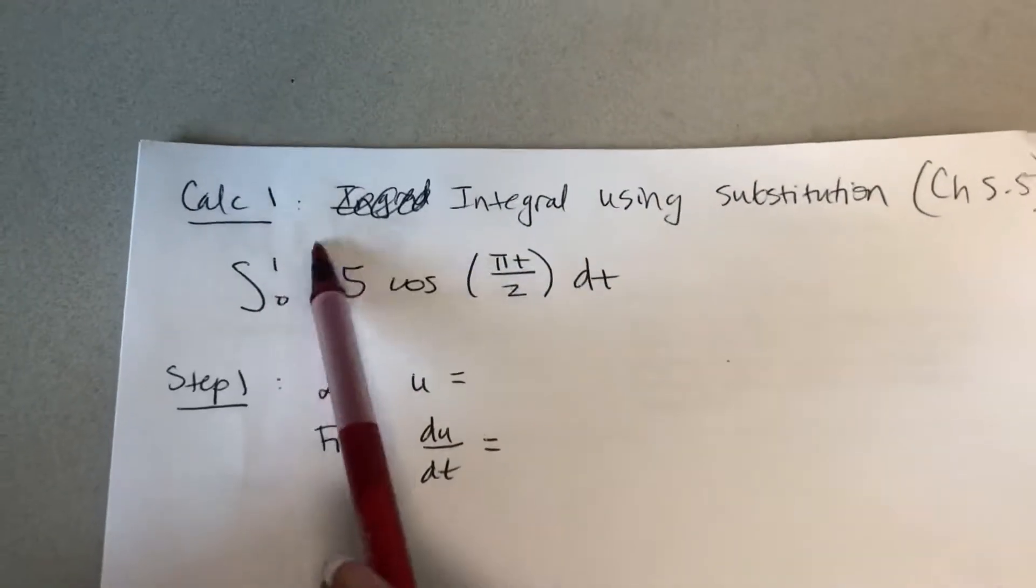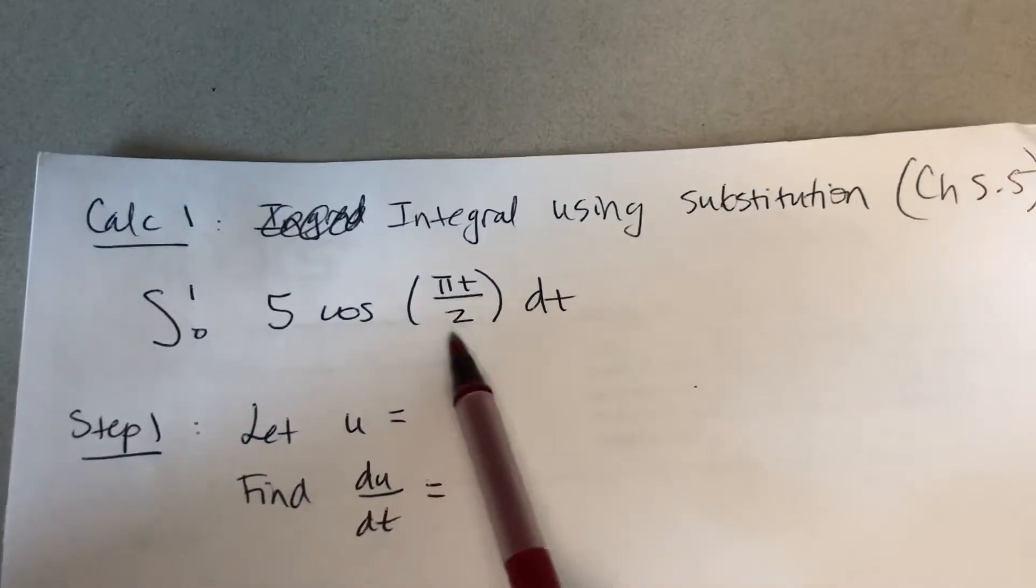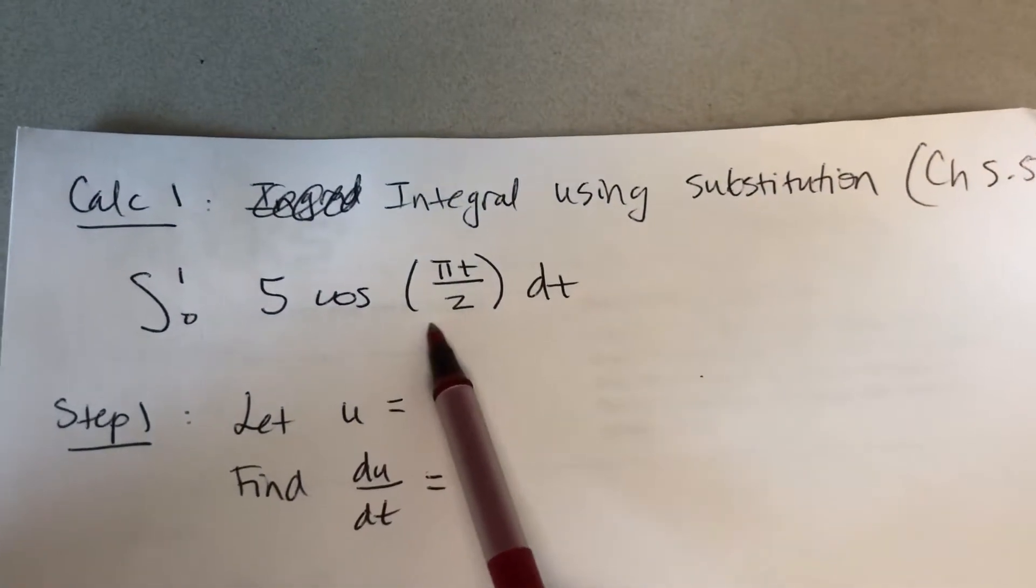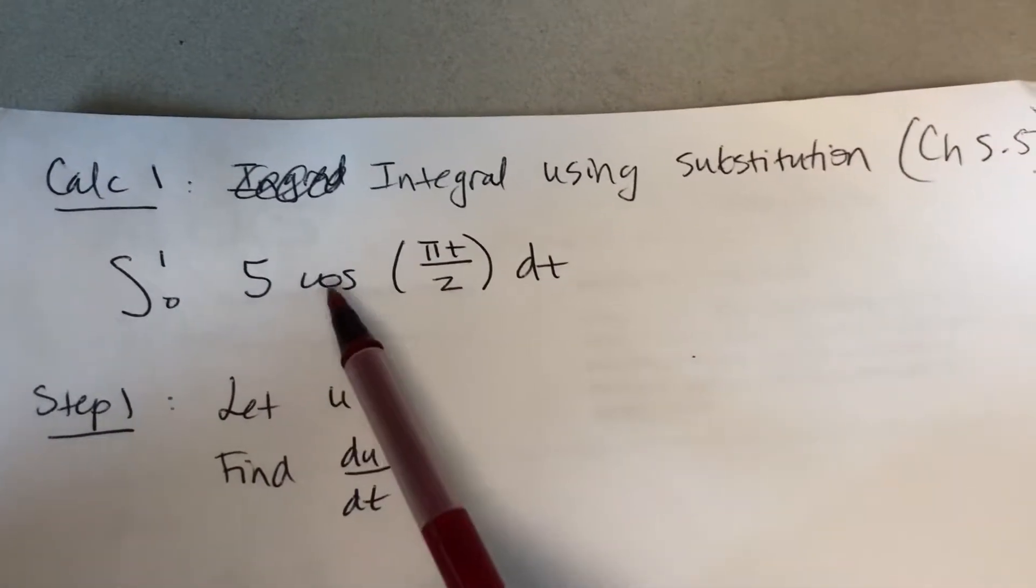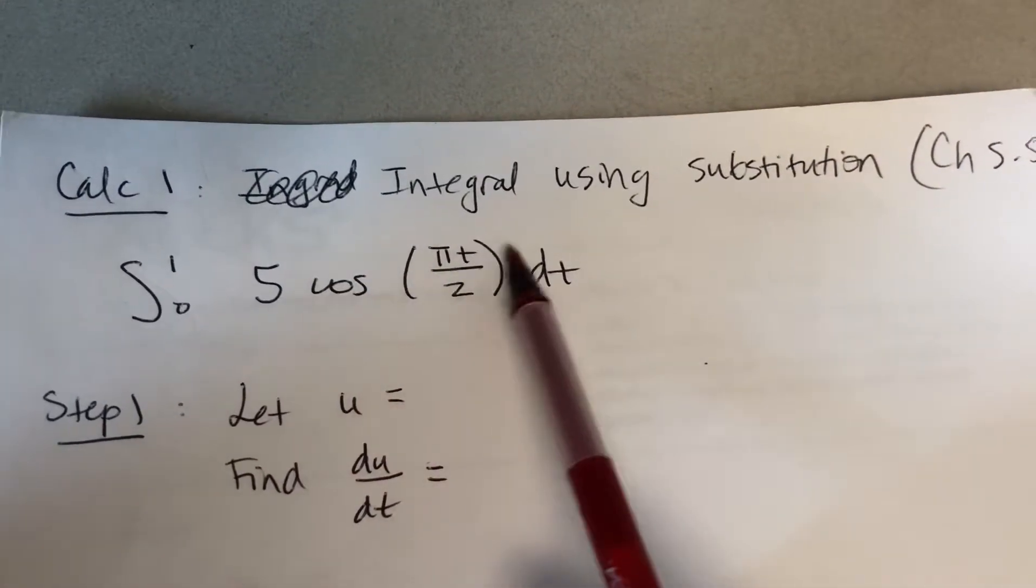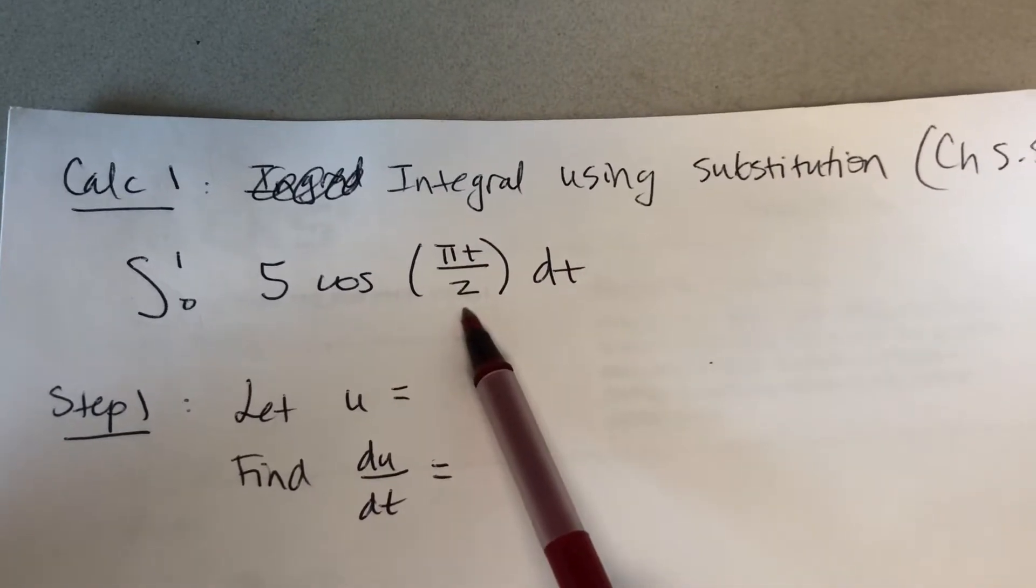It's a definite integral because you see endpoints. The first thing you look at is the function and ask yourself can I easily find the antiderivative? Looking at this, the answer is no because you can find the antiderivative of cosine, but because you have pi t over 2, that makes it a little bit more challenging and difficult.